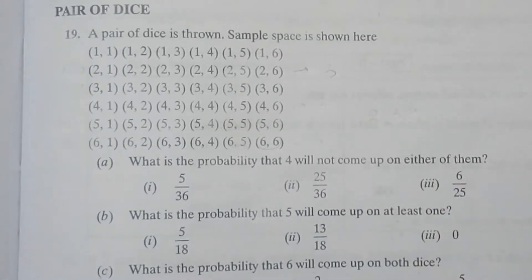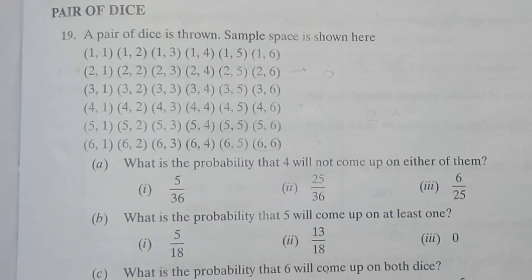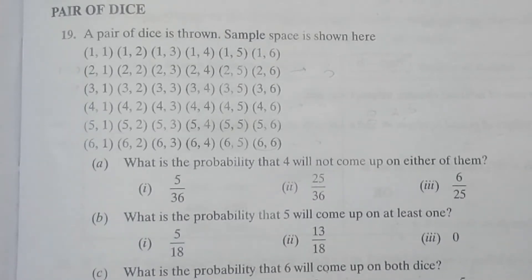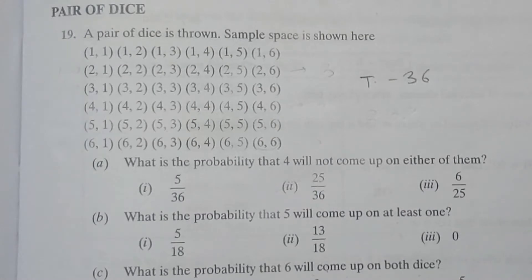When we throw these dice, 4 should not come. Let us check how many times 4 is coming. Because the total outcomes are 36, so let us check how many times the 4 is coming.